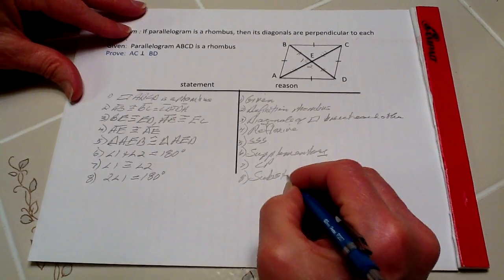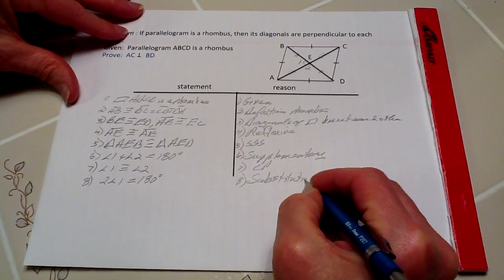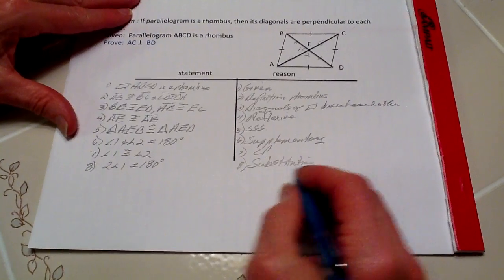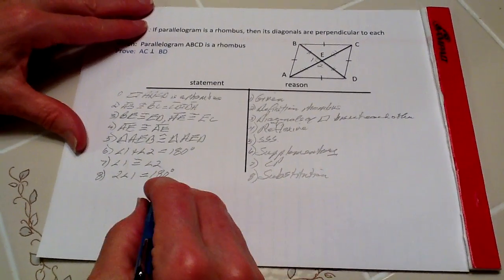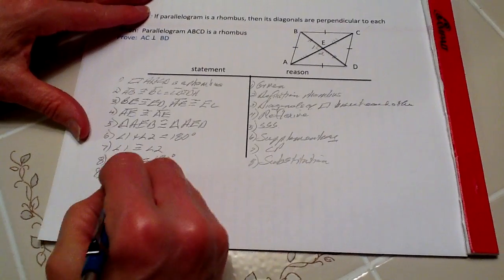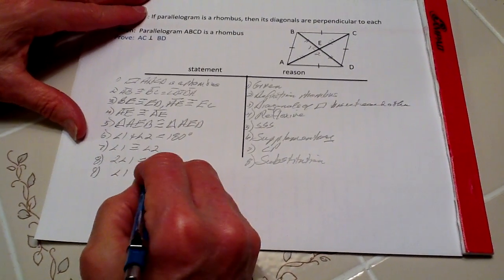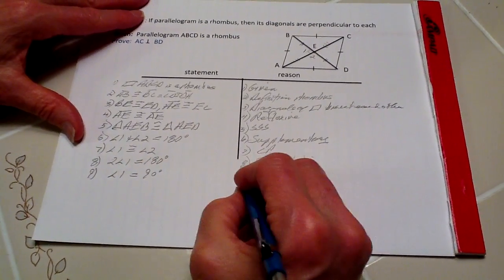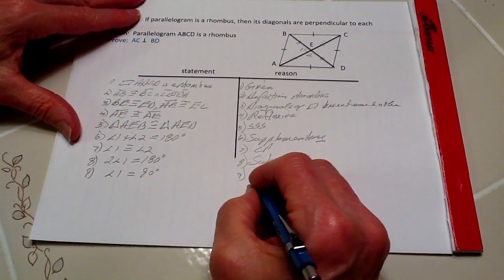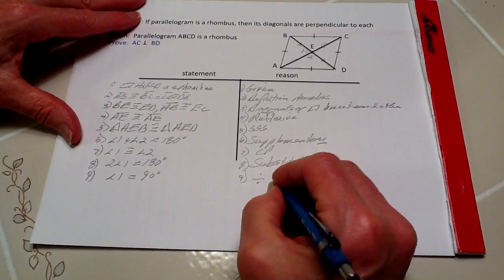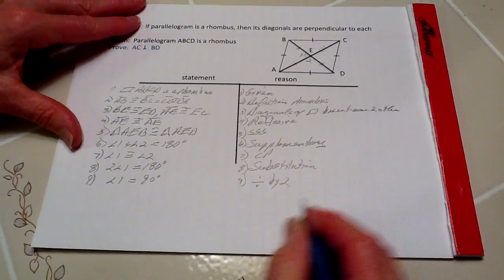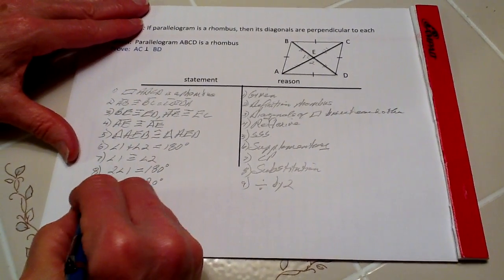If I divide both sides by two, we will end up with angle one equals 90 degrees. I divided by two.